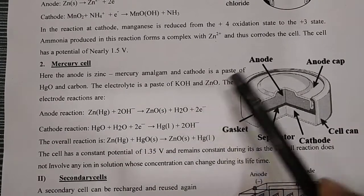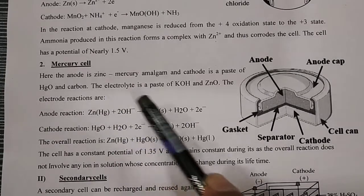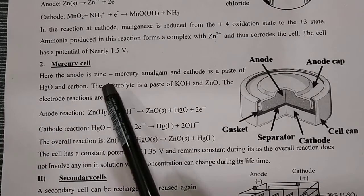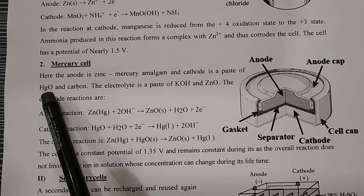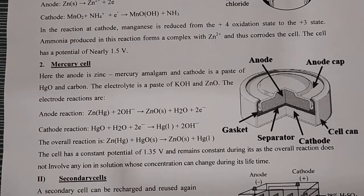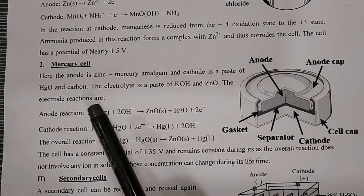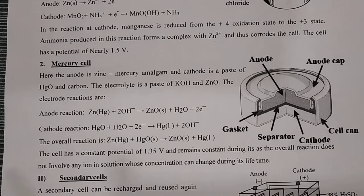The mercury cell consists of zinc and HgO. The electrochemical reactions: at the anode, oxidation occurs — Zn plus 2OH⁻ gives ZnO plus H2O, and 2 electrons are released. At the cathode: HgO plus H2O plus 2 electrons gives Hg plus 2OH⁻. The overall net reaction: Zn plus HgO gives ZnO plus Hg (liquid). The cell has a constant potential of 1.35 volts.